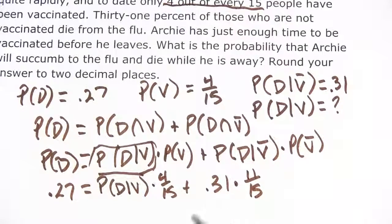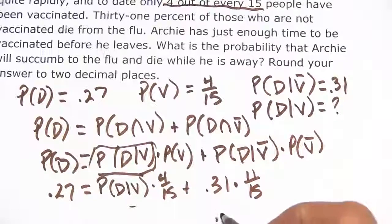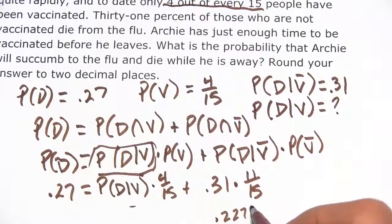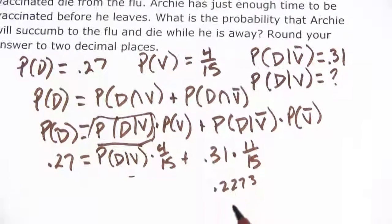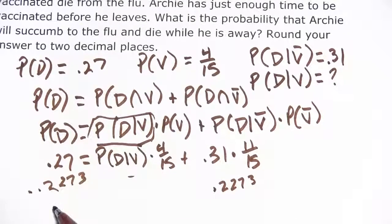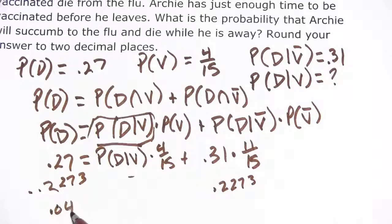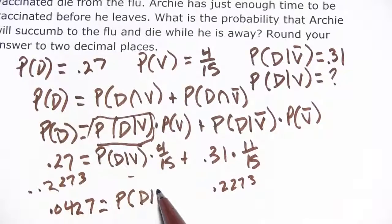If we crunch the numbers and do the algebra, we should get the probability of dying if you have been vaccinated. I'm going to take 0.31 times 11, divide it by 15, so that's 0.2273. We'll subtract that from 0.27, so that gives us 0.0427, and over here we've got our probability that we're looking for.